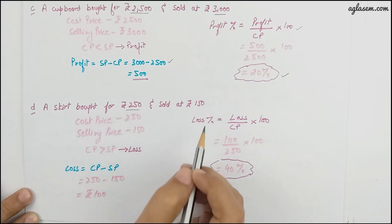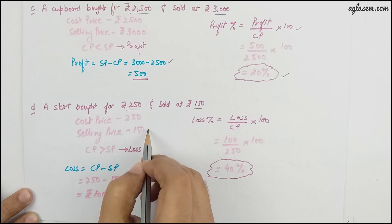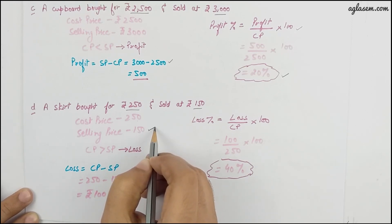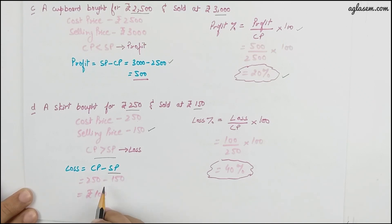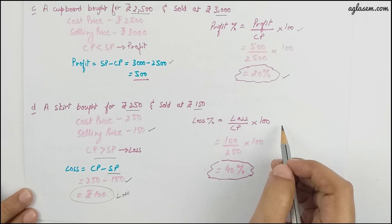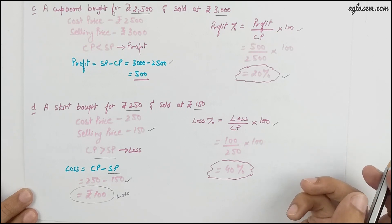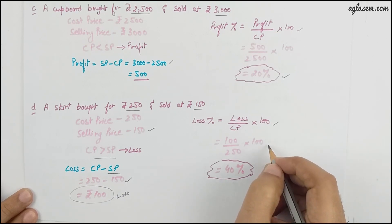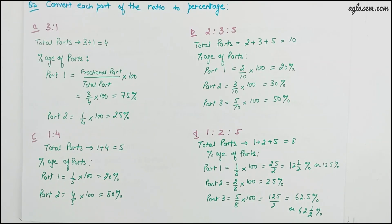Part (d): a skirt bought for 250 rupees sold at 150. The selling price is lower than the cost price, so there is a loss of 100 rupees — calculated as cost price minus selling price, 250 minus 150. Loss percentage is 100 divided by 250 multiplied by 100, giving 40 percent as the loss percent.